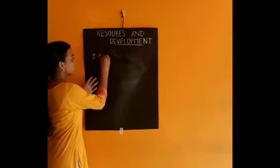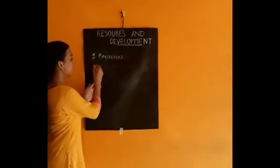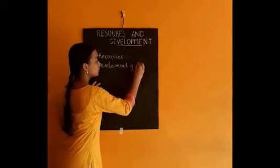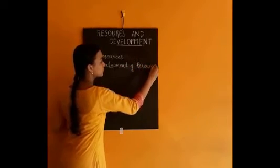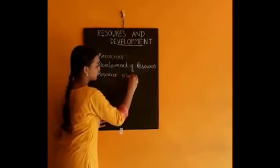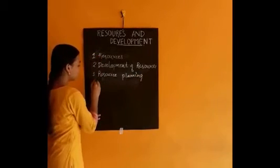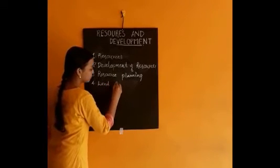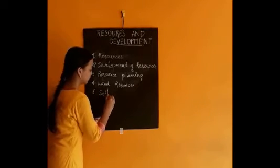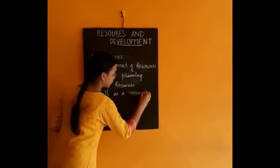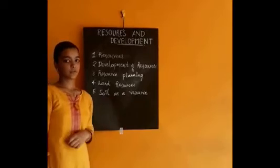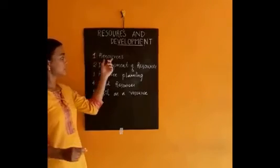The first sub-topic is Resources. The second one is Development of Resources. The third one is Resource Planning. The fourth one is Land Resources. And the last one is Soil as a Resource. In the fifth sub-topic, Soil as a Resource, there is a map included, and this is the first map of the Geography lesson. In this first session, I am taking the first sub-topic, that is Resources.